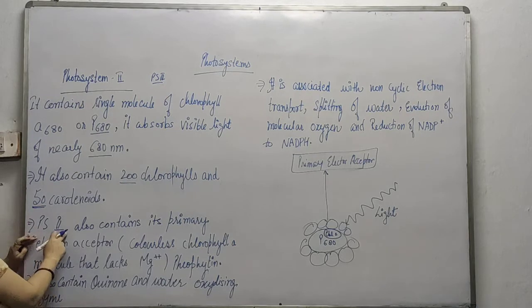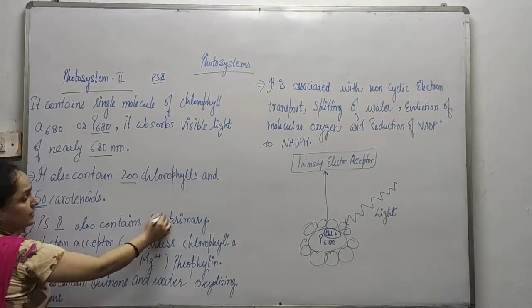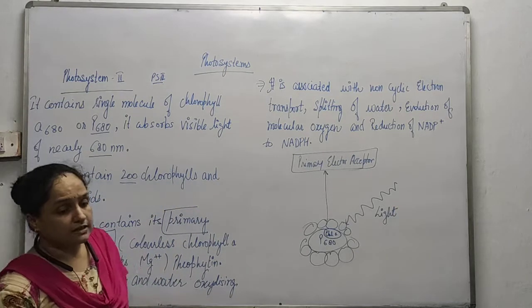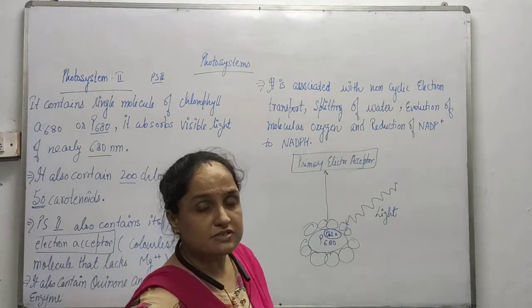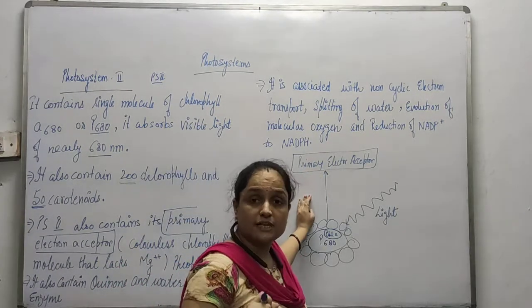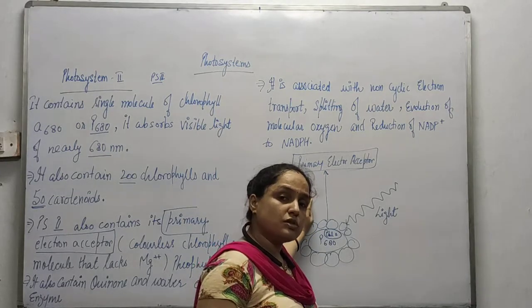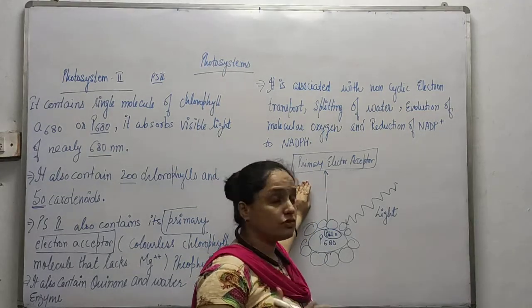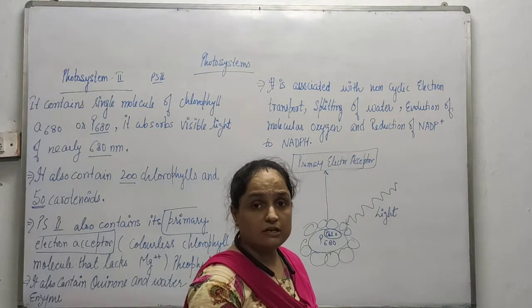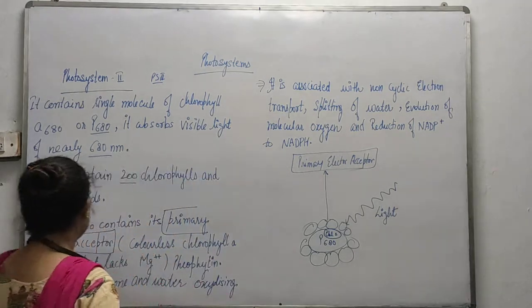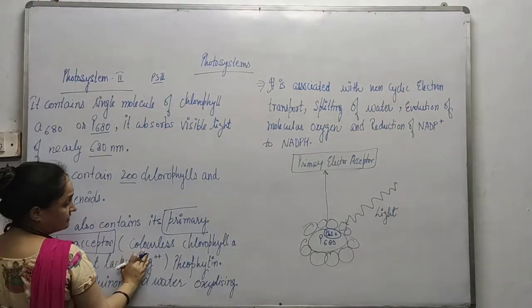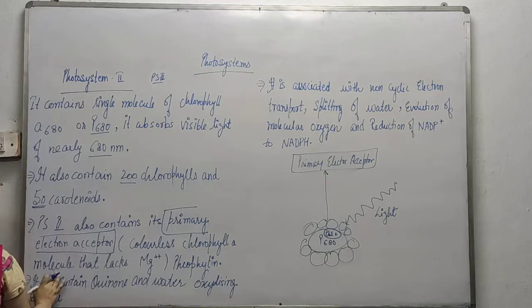Pigment system 2 also contains a primary electron acceptor, just as pigment system 1 had one. This pigment system is usually dark green in color. The primary electron acceptor is a colorless Chlorophyll A molecule.